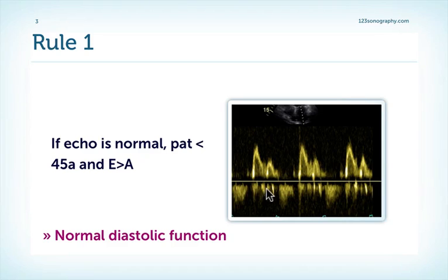Rule number one: if echo is normal and the patient is below 45 years of age and E is taller than the A wave, as in this example, then the patient simply has normal diastolic function and you do not need to do anything else.